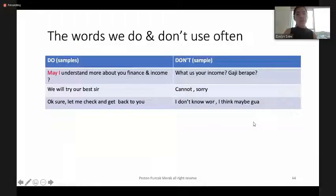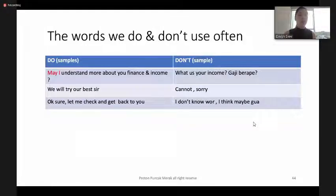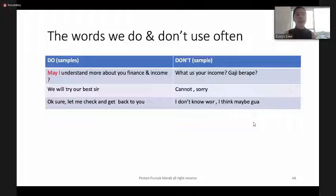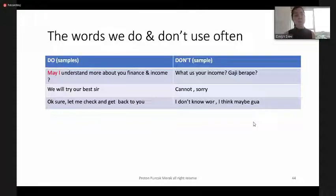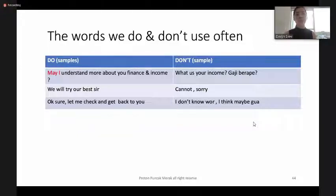Here are some wording examples — words to use and words to avoid. Instead of asking a customer 'What is your income?', change it to 'May I understand more about your finance and income situation?' Instead of saying 'Cannot,' say 'Let me try first' or 'I will check and do our best.' Avoid saying 'I don't know, I think, maybe' — instead say 'Let me check and get back to you shortly.'